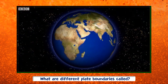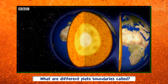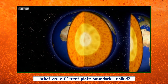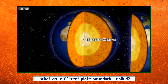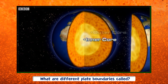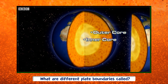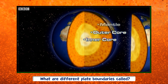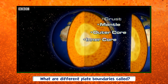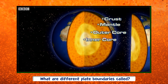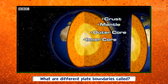The Earth is made up of four layers: the inner core, a solid metal; the outer core, a liquid metal; the mantle, a semi-liquid rock; and the crust, made up of solid rocks with a brittle surface.